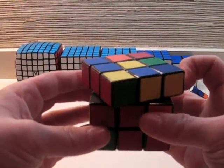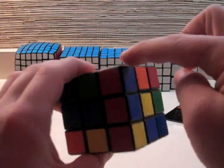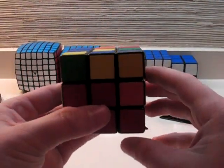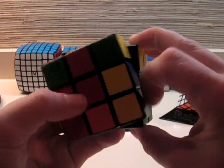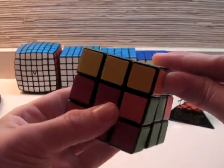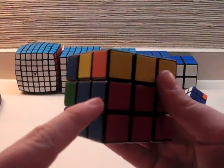L, U. Now, my corner and edge are paired up right here. So all you need to do is an F, U, F prime. And now the piece will be in its correct spot.